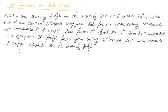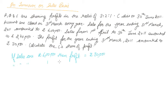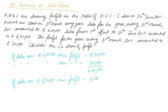We will use the simple unitary method. If sales are rupees 6 lakh, then profit is rupees 30,000. If sales are rupees 1, then profit is 30,000 divided by 6 lakhs. And if sales are rupees 2 lakh 40,000, then profit will be 30,000 divided by 6 lakhs, multiplied by 2 lakh 40,000, which equals rupees 12,000.